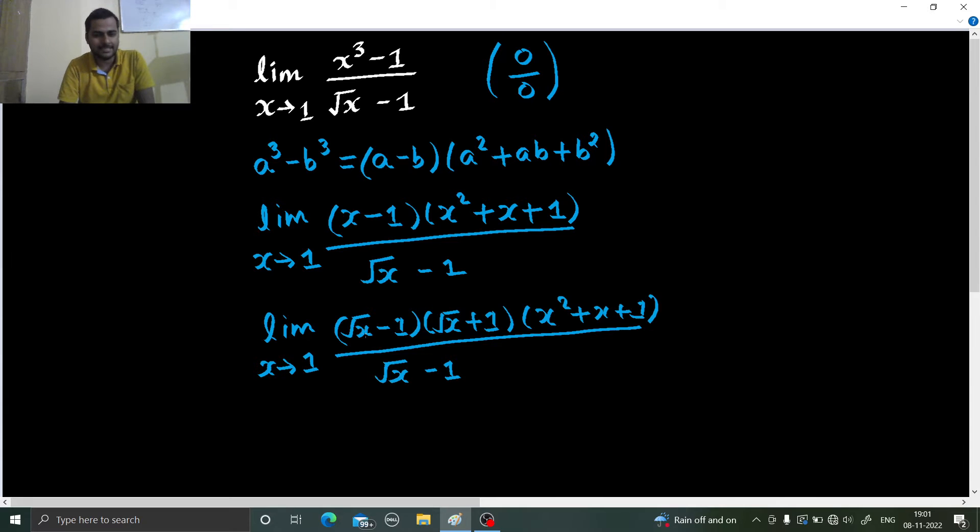Now, as you can see this under root x minus 1 which was the problematic portion can now be cancelled. So what we are left with is not causing any sort of problem. We can directly put x equals to 1 here.